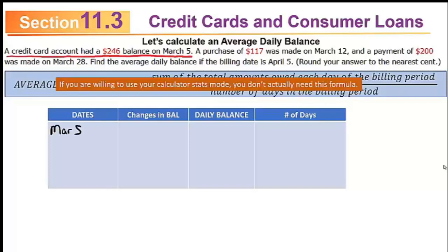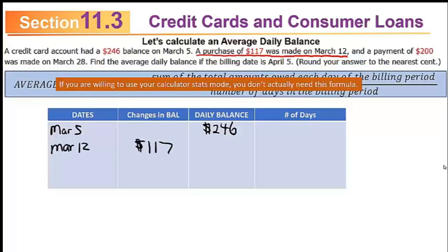First, read the problem and find the earliest date something happened. March 5th was the first date — the credit card balance was $246, so the daily balance on March 5th was $246. That's your starting point. The next date anything happened was March 12th, when there was a purchase of $117. That increases the balance, so that's a positive $117. Adding $117 to the $246 already there gives a new daily balance of $363.